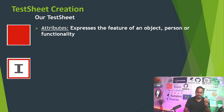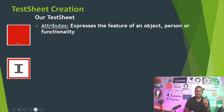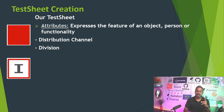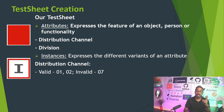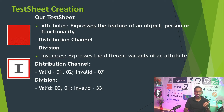Attributes express the feature of an object, person, or functionality. In our case, distribution channel and division are two attributes. Instances express the different variants of an attribute. For our distribution channel attribute, the valid instances are 01 and 02, and the invalid instance is 07. In the same way, the division attribute has instances: valid values are 00, 01, 02, and invalid value is 33.